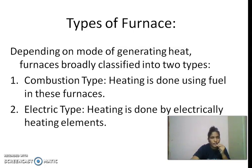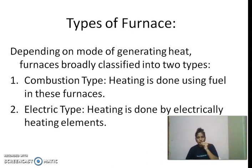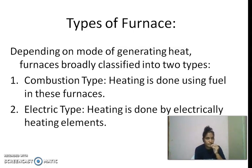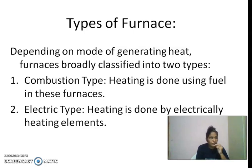There are two types: one is the combustion type and another is the electric type. In the combustion type, heat is generated by the combustion of some fuel like coke or coal — that furnace is called the combustion type furnace. In the electric furnace, heating is done by electrically heated elements. The muffle furnace is an example of the electric type, and the blast furnace is an example of the combustion type.